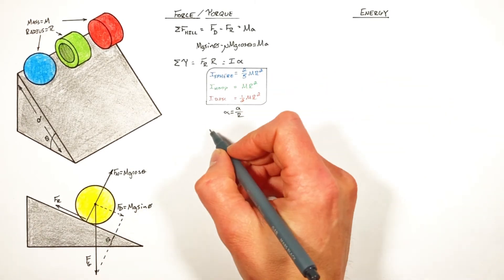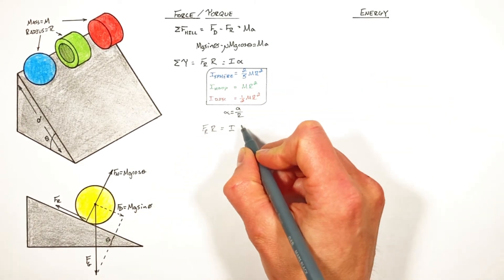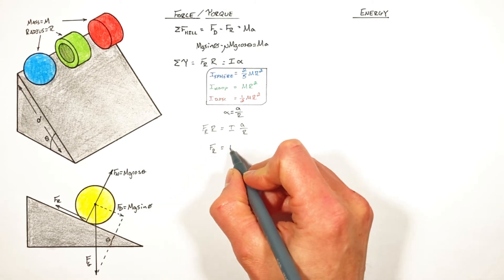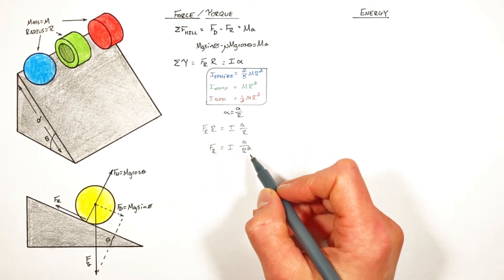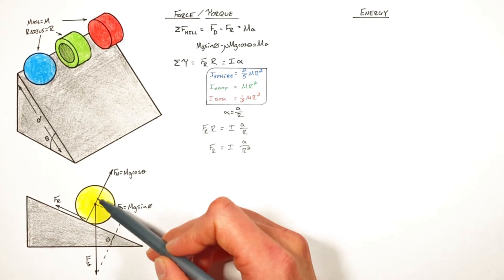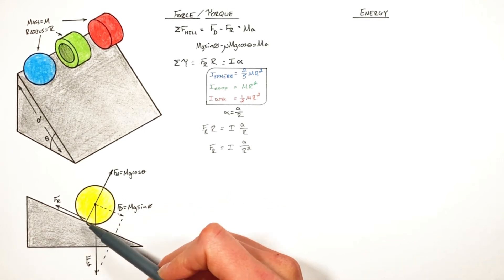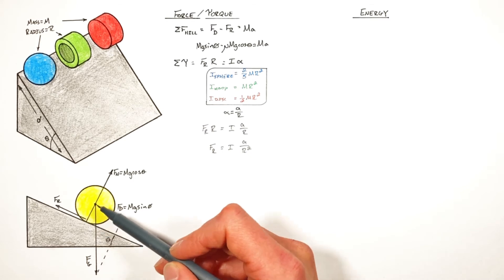So subbing this term in here we come up with an expression for the required friction between this rotating object and the hill in order to keep this object actually rolling without slipping.